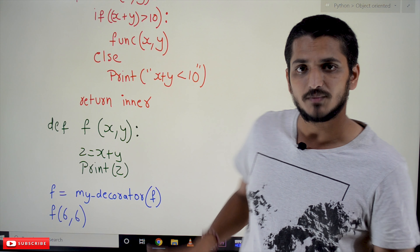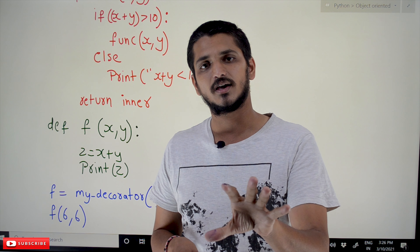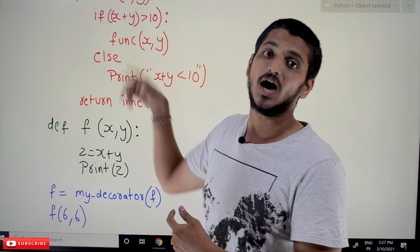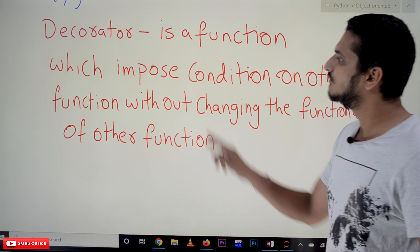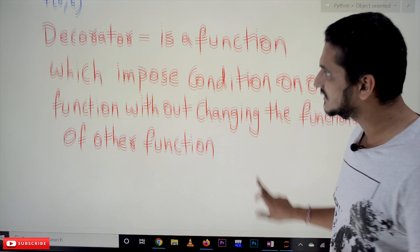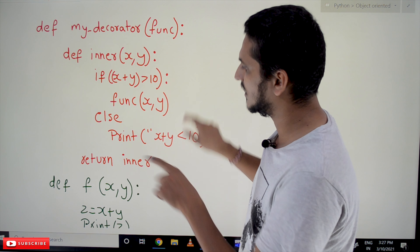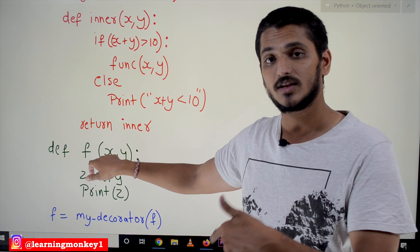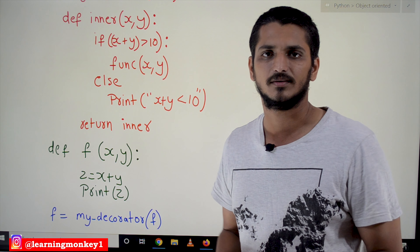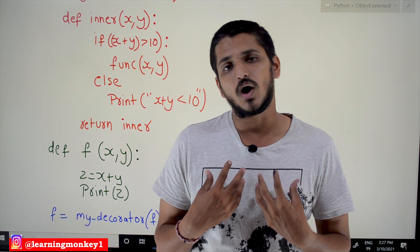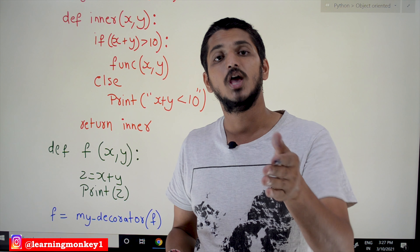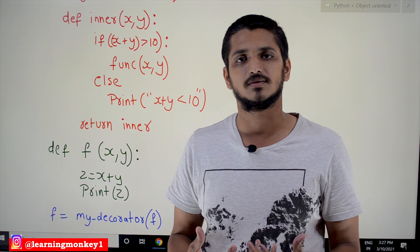This is the important concept — this is the definition of a decorator. A decorator is a function which imposes a condition on other functions without changing the functionality of those other functions. `my_decorator` is a function which imposes a condition on function `f` without changing `f`'s functionality. The use of this: if you want to apply a condition on a function, write a decorator. If you want a different condition, write a different decorator.